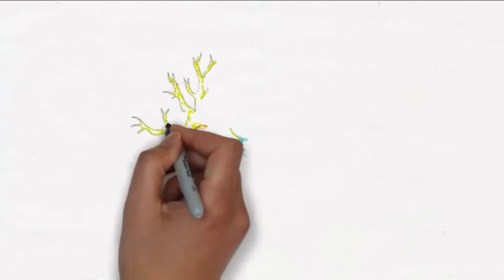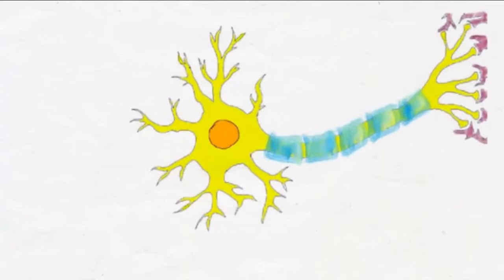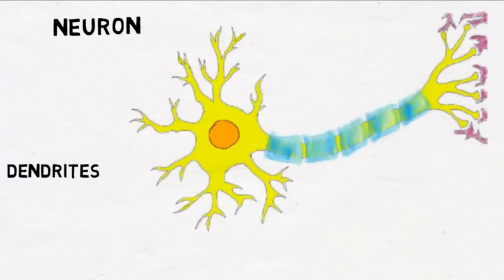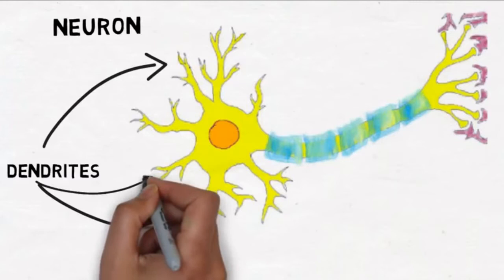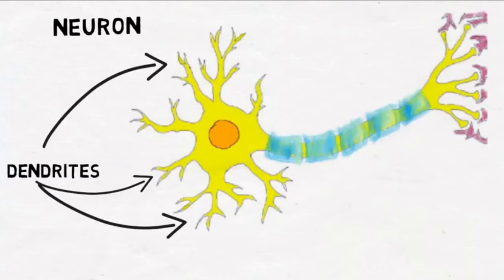This is a generic image of a neuron. Neurons actually come in all shapes and sizes, but this is the prototypical version of a neuron that you'll often see in a textbook. The structures extending from the left side of the neuron that look a little bit like tree branches are called dendrites. Dendrites are the area where neurons receive most of their information. There are receptors on dendrites that are designed to pick up signals from other neurons that come in the form of chemicals called neurotransmitters.